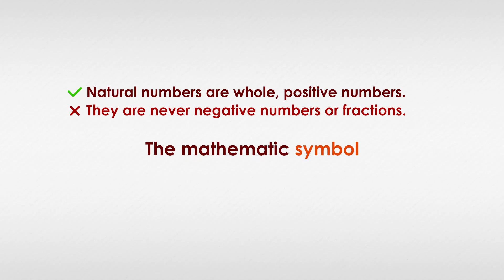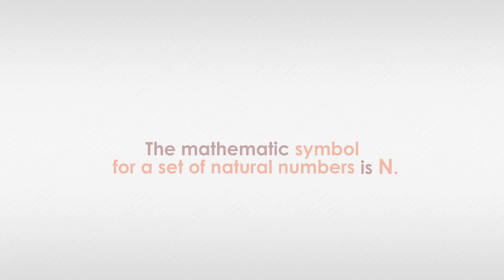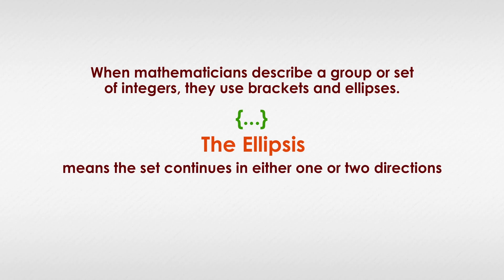The mathematics symbol for a set of natural numbers is n. When mathematicians describe a group or set of integers, they use brackets and ellipses. The ellipsis means the set continues in either one or two directions, getting smaller or getting larger in a predictable way.